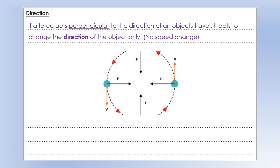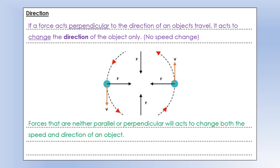If we apply a force perpendicularly to the direction an object travels - at 90 degrees to it - that force will change the direction of the object but not its speed. More broadly, if the force is neither parallel nor perpendicular, it could change both the speed and the direction of the object.